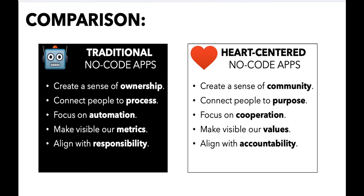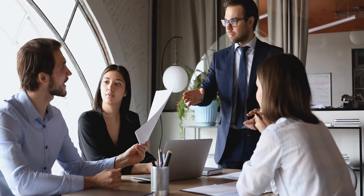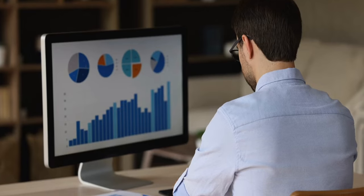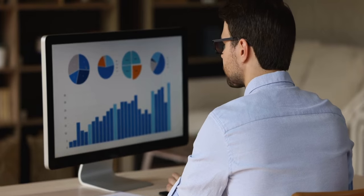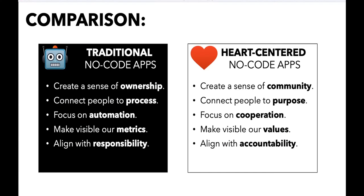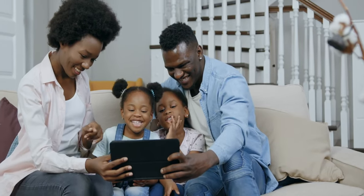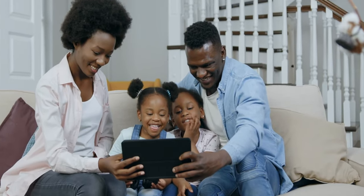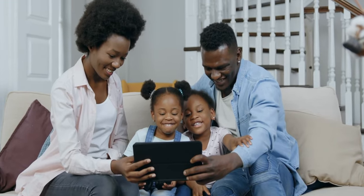A traditional app aligns to responsibility, but a heart-centered one aligns to accountability. Look at these two lists carefully — traditional no-code apps are all about who owns it, what process to finish, what metrics are we hitting, who's responsible. It's a lot of pressure. But you could rebuild that same application through a sense of communal purpose, values, and accountability. It's just such a different way to think.